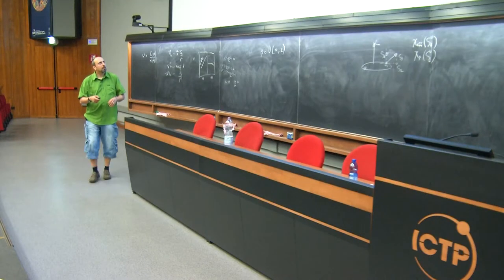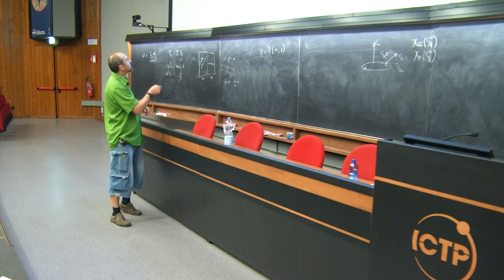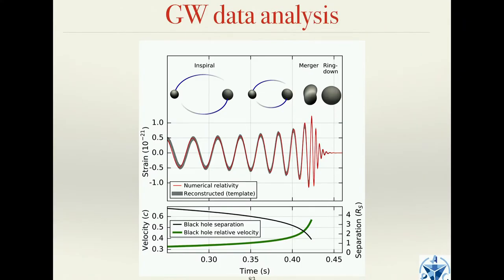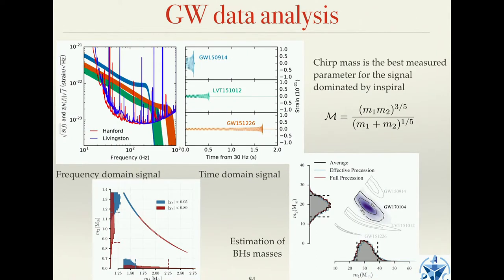The banana shape comes because for that signal we see a lot of inspiral and very little merger. If you see only inspiral, the best measured parameter is chirp mass. If you see merger as well, the merger depends on the total mass m1+m2 — a different combination. If you measure both, you start breaking the degeneracy and can measure individual masses. For the signal where we see inspiral and merger, we get a regular ellipse shape. An extreme example is neutron stars, where you see only inspiral and get a line of equal chirp mass.